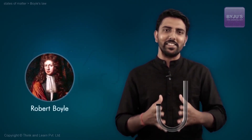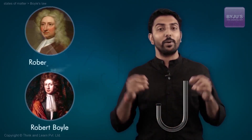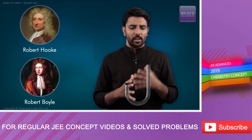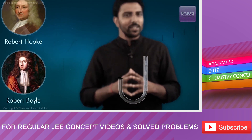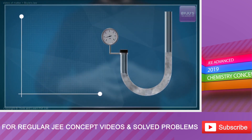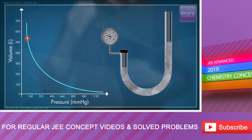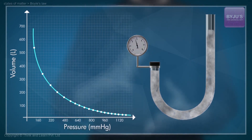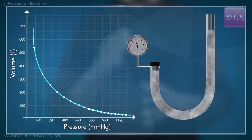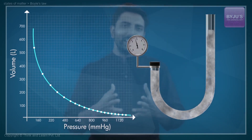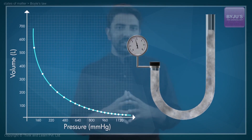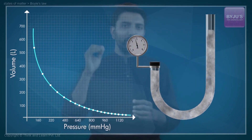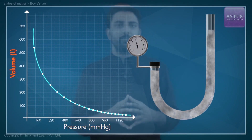Robert Boyle, a pioneering English scientist, and his assistant Robert Hooke used this device to measure the volume of a sample of gas at varying pressures. They used mercury to trap a sample of air in the J-tube and kept adding mercury in many slow and small installments to increase the pressure of the confined gas. The slow addition of mercury served two purposes: one, they wanted a smooth curve such that each addition gave steady, unchanging values of pressure and volume.